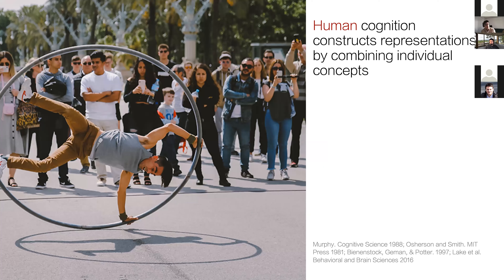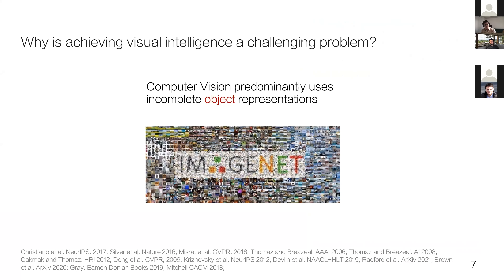In contrast, we know that human cognition can construct an infinite number of representations from just a finite set of previously seen concepts. People are inductively developing a compositional model of the world using their past experience, appreciating new situations and new scenes by understanding that they're made of smaller components they have already seen.